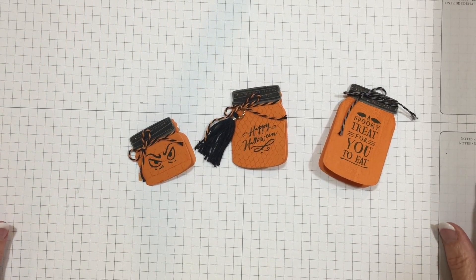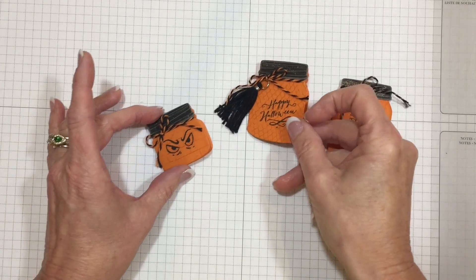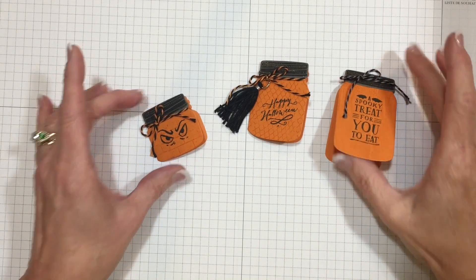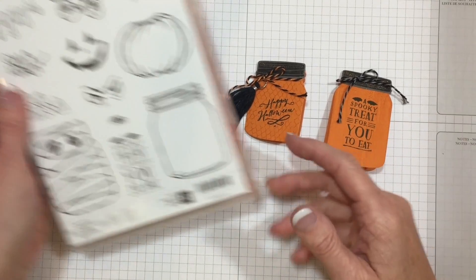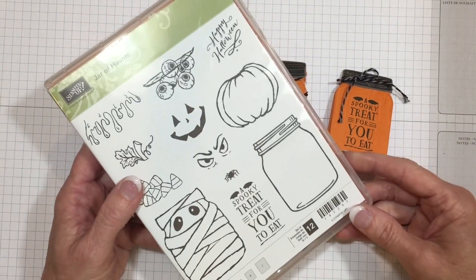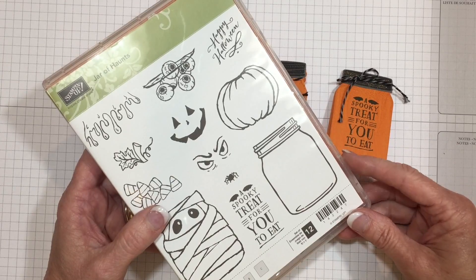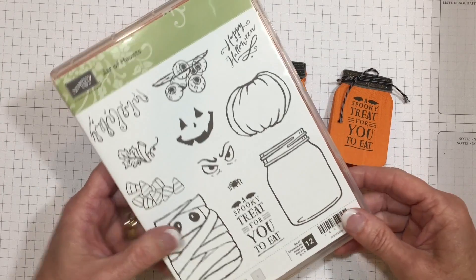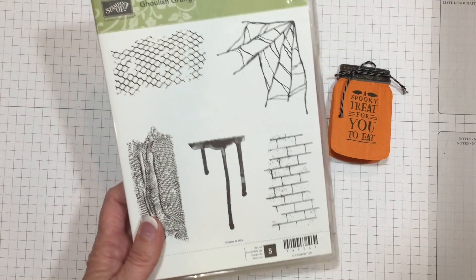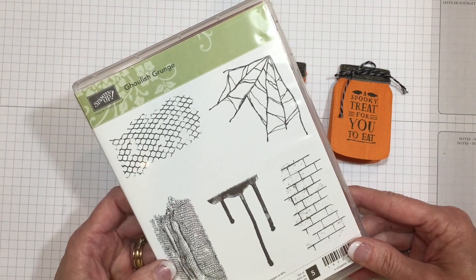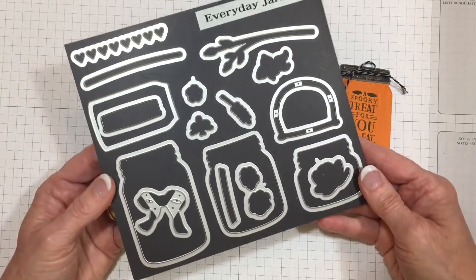Hi everyone, welcome back to Be Creative Stamping. Today I'm going to show you how to make these three adorable jar tags. We'll be using the Jar of Haunts stamp set featured in the 2016 Stampin' Up Holiday Catalog, along with Ghoulish Grunge from the holiday catalog.